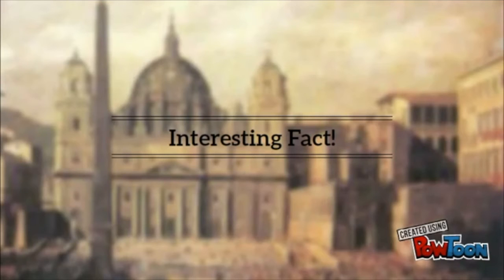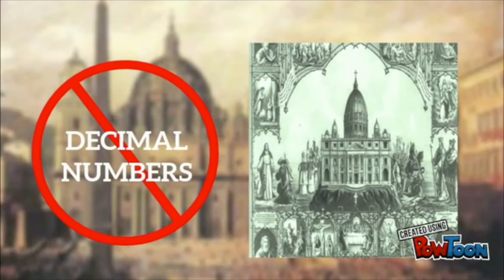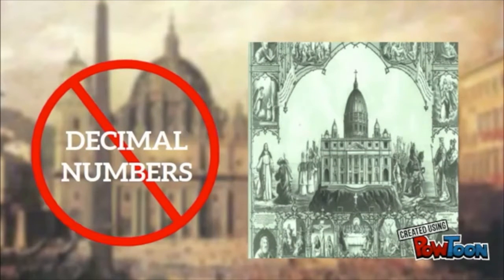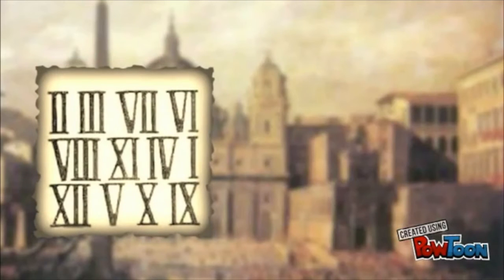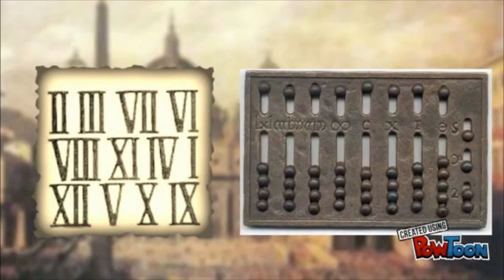Here's an interesting fact. Math involving decimals was punishable when the church controlled Europe. Europeans continued using Roman numerals and counting tables, which showed their lack of appreciation for mathematical progress.